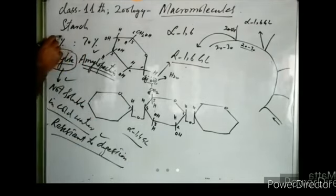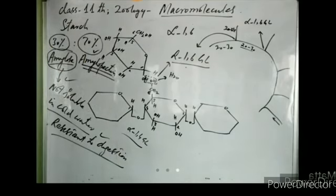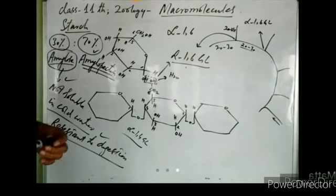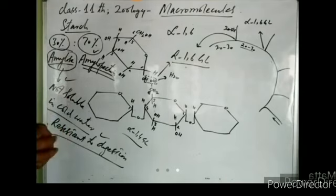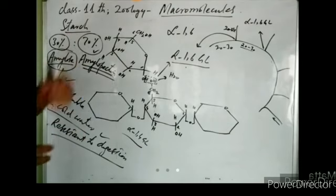A starch molecule is formed of 30% amylose and 70% amylopectin. Starch-rich food substances include wheat, rice, potatoes, bananas, and other fruits — these are synthesized by plants and stored as starch.